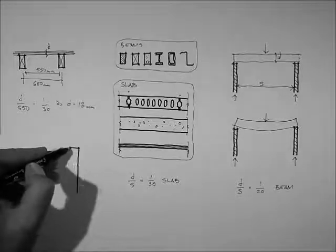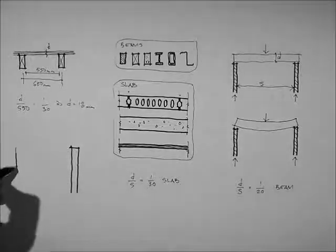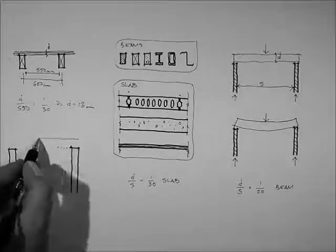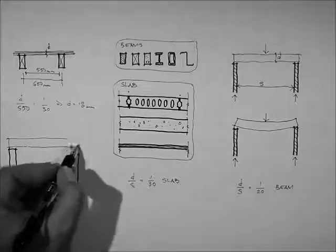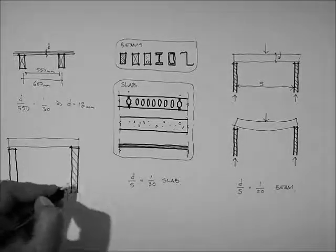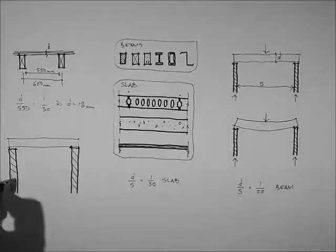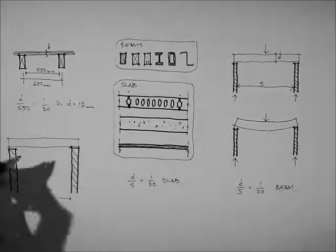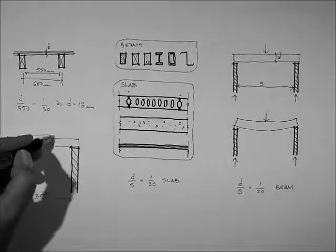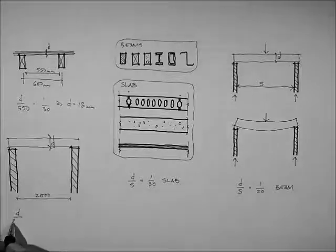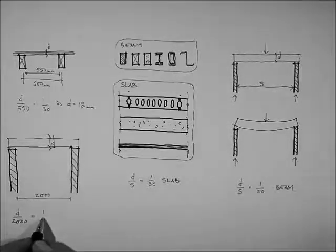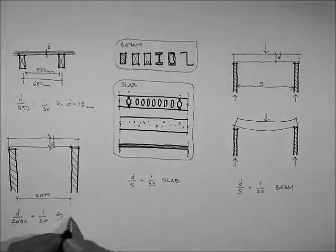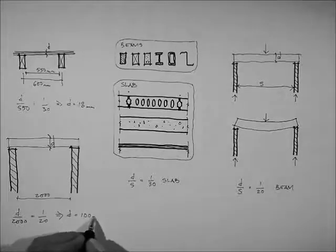That's a slab type material. Here's a beam type material, two walls with a beam spanning between them. Let's say the span is 2m, 2,000mm. 1,000mm span-depth ratio of a beam, so 20th, therefore D equals 100mm.